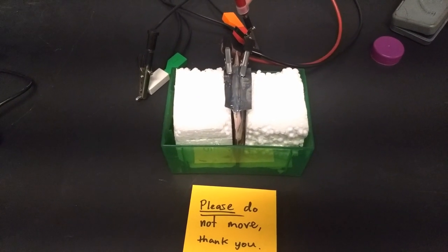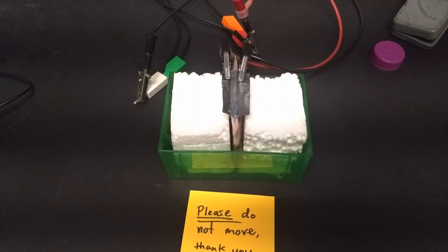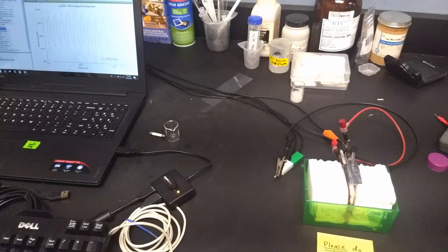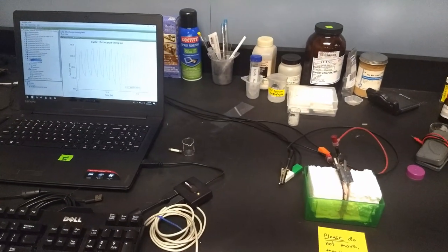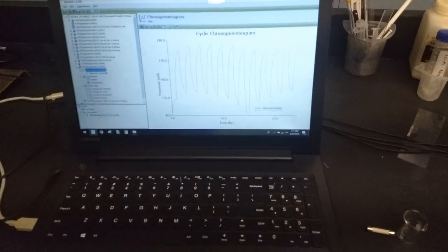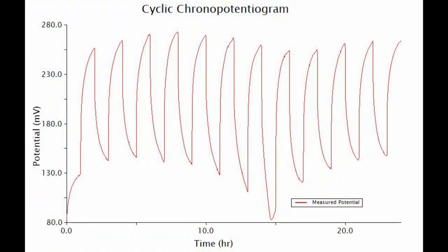We have another 24 to 48 hours of cycle test data for the all-iron battery with the polyacrylate membrane, so it's the cheapest of all the membranes, and it seems to be holding up pretty well. You can see that dip toward 15 hours or so.